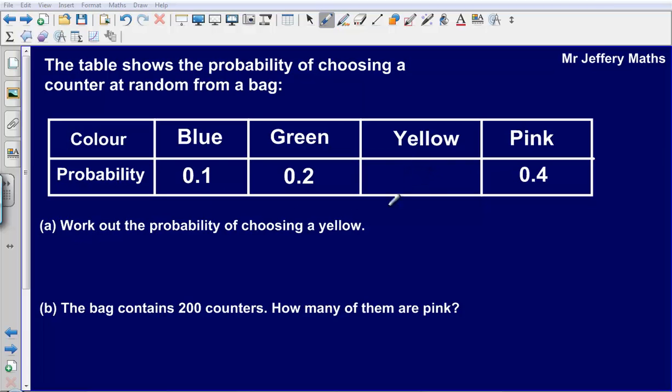So what we can do to work out the missing one is simply do 1 minus 0.1 minus 0.2 minus 0.4. And so that gives us an answer of 1 minus 0.1, 0.9, 0.7, 0.3.